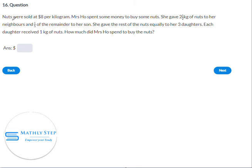Question 16. Nuts were sold at $8 per kilogram. Mrs. Ho spent some money to buy some nuts. She gave 2.5 kg of nuts to her neighbor and 1/5 of the remainder to her son.